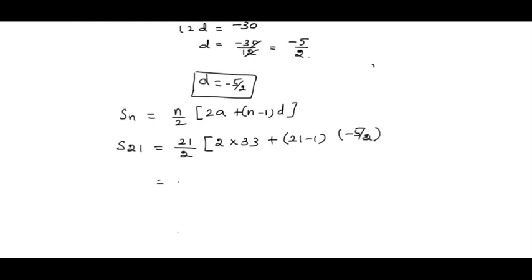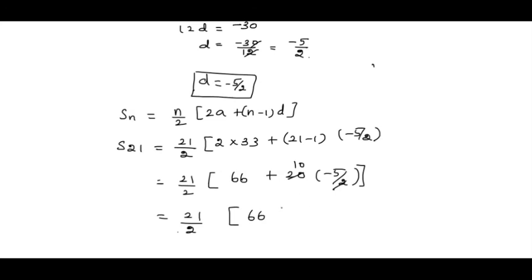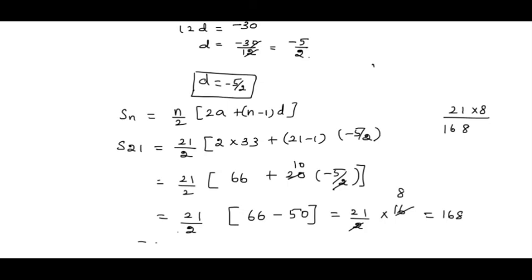Now we compute S21. We have 21 by 2, and this is 66 plus 20 into minus 5 by 2. So we have 21 divided by 2 and this is 16. The answer for S21 is 16. Thank you.